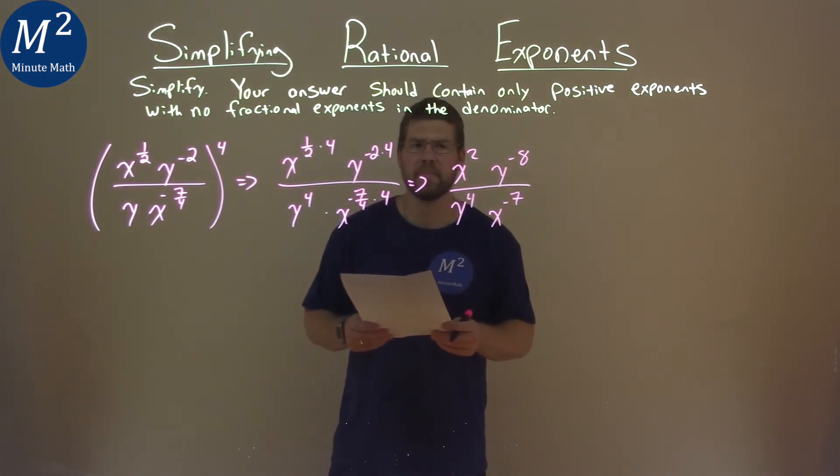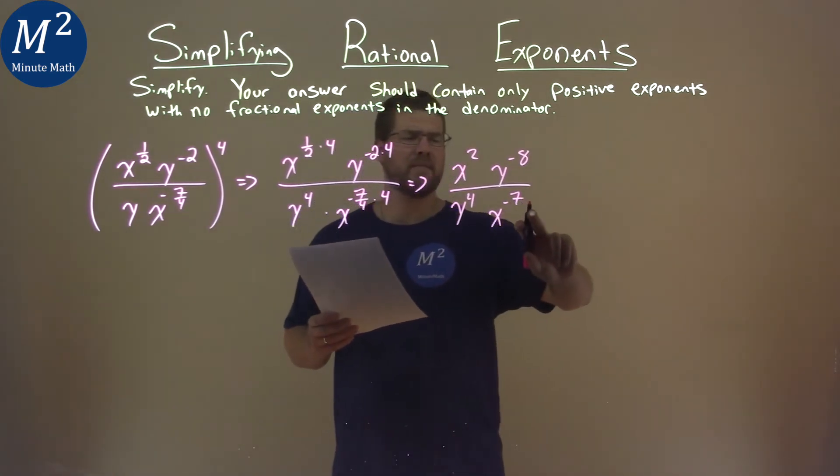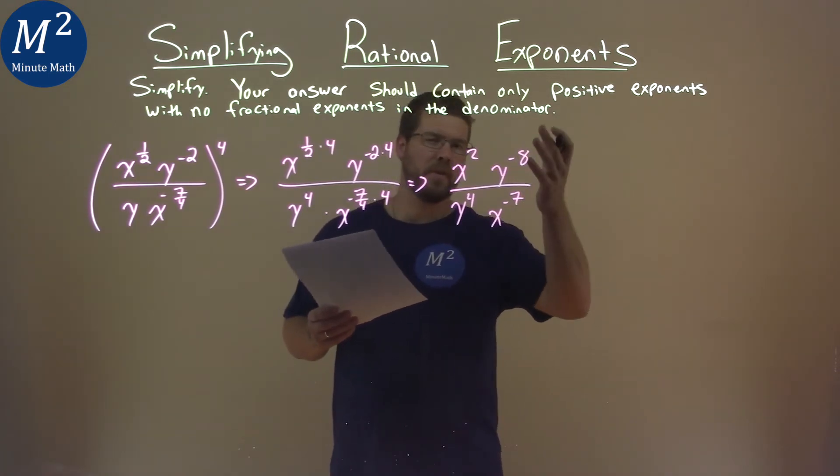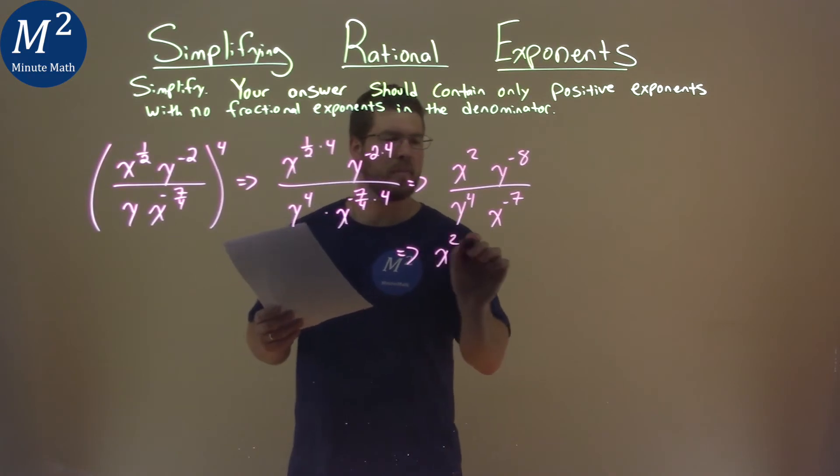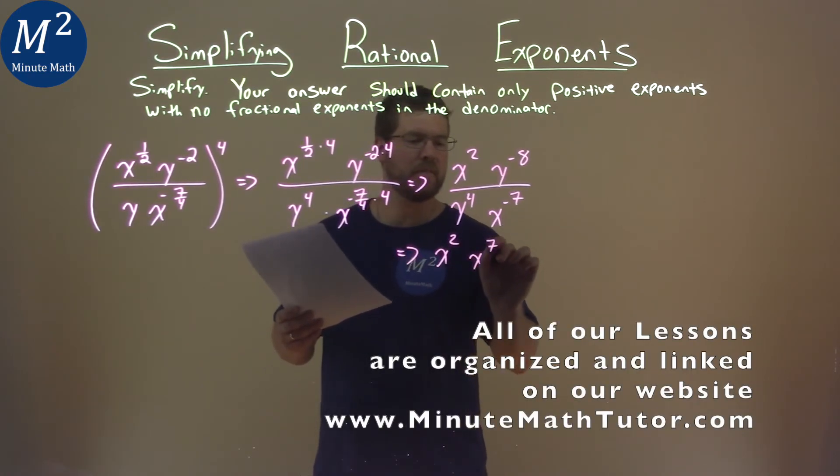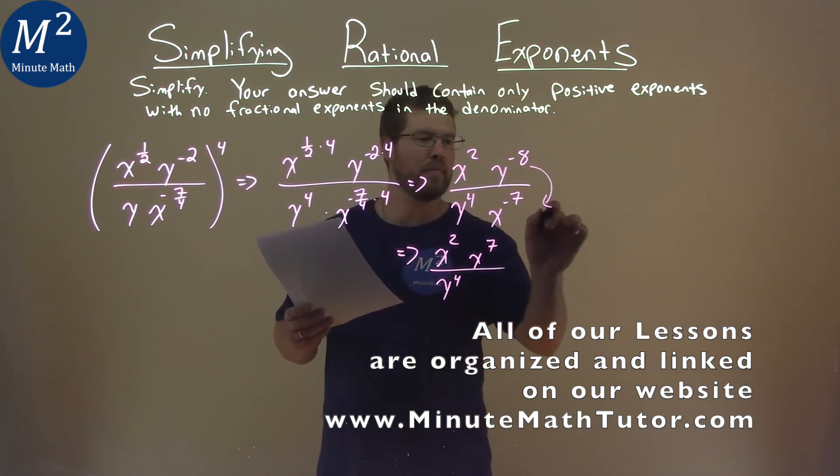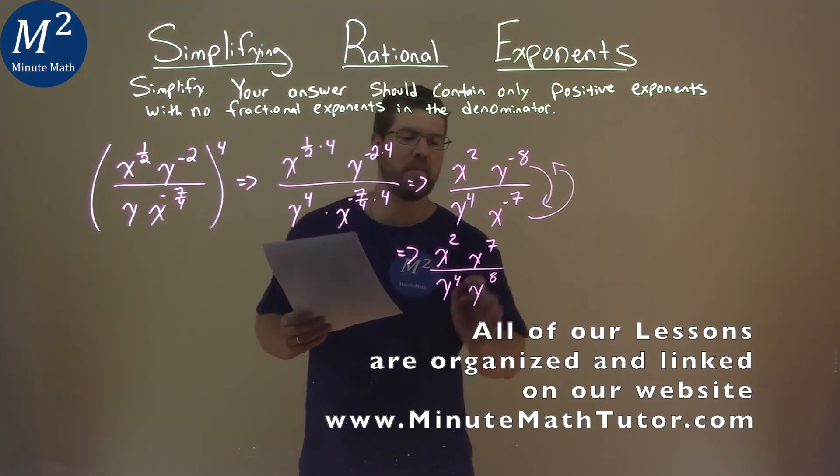So this isn't too bad now. We don't want negatives in the denominator, or really a numerator for negative exponents, so we've swapped that. Go down here, x squared, bring this x to the positive 7th power in the numerator, and we bring down the, remember, we're swapping this, y to the positive 8th power.